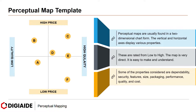Some of the properties considered are dependability, security, features, size, packaging, performance, quality, and cost. The example displayed here talks about two parameters: quality and price. So if you look at the diagram, Brand C is high on price and high on quality.